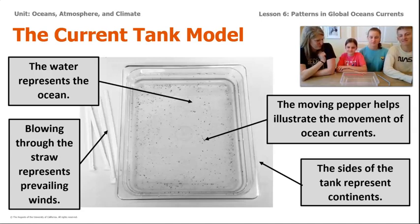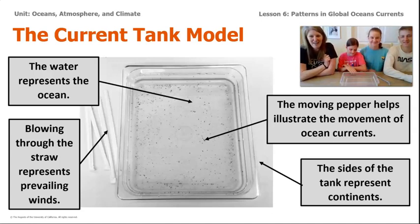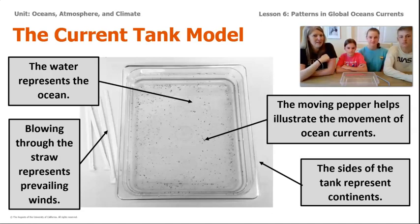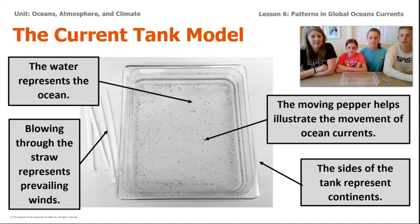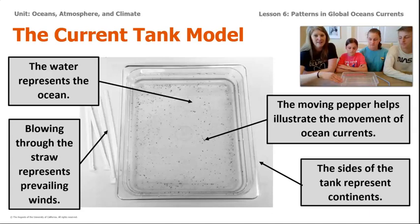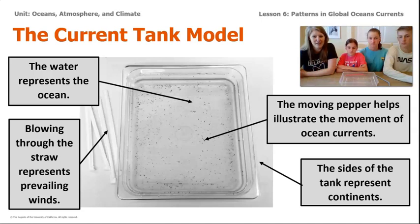We'll be creating wind through straws to model the winds around the earth. Jacob, will you tell my students what the parts of the model represent? The water inside of the bin represents the ocean. The blowing through the straw represents the prevailing winds. The pepper inside is to illustrate the moving ocean currents and show movement. And the sides of the tank represent the continents. On our planet we have continents, and so the walls of the tank represent the continents.